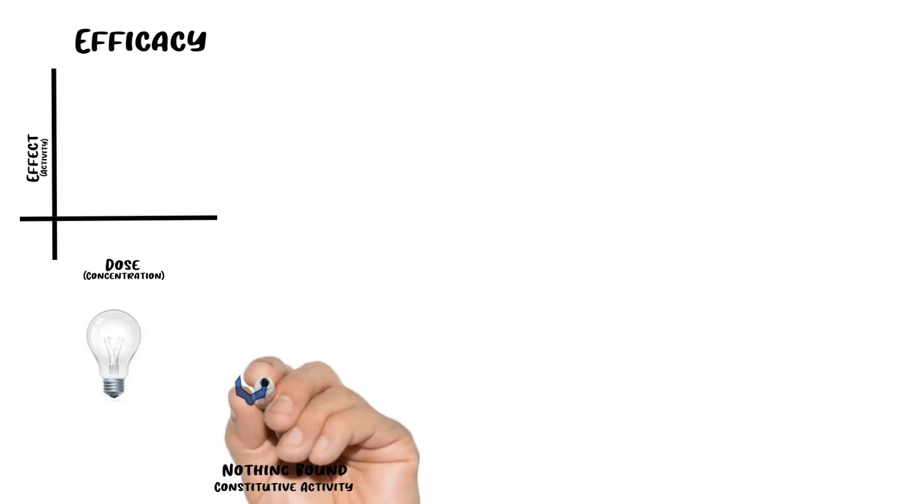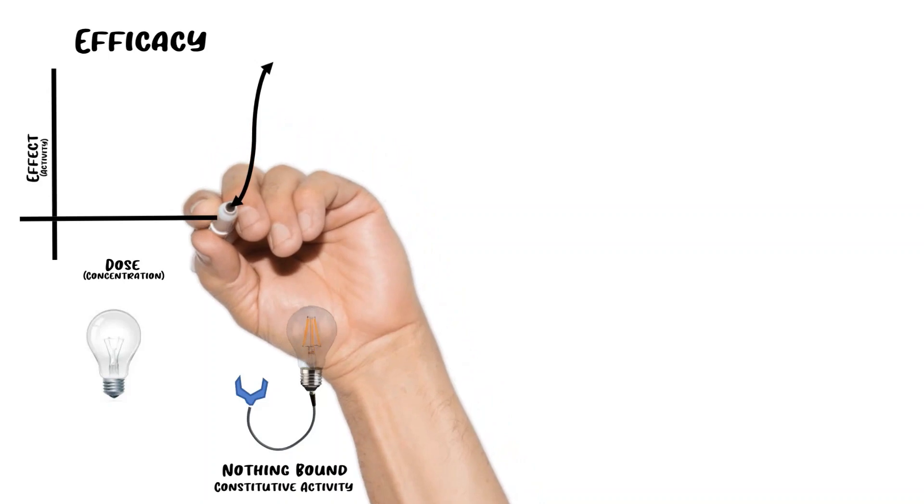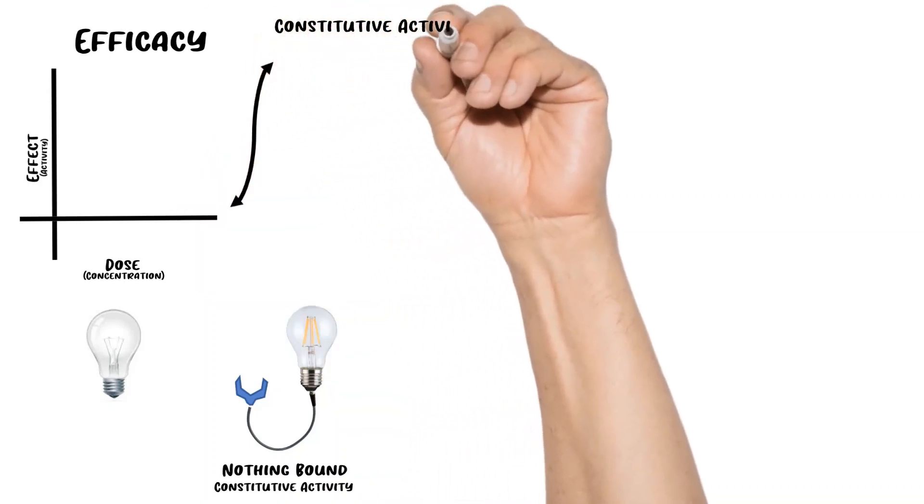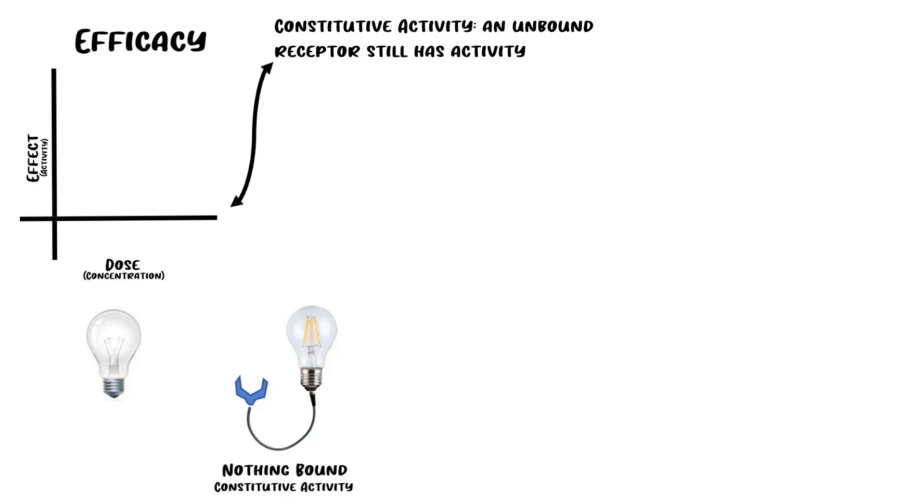Let's hook up this receptor, which is not bound by any drug or ligand, and see what happens to the light bulb. We can see that the light bulb has just a little bit of light, even though there's nothing bound to the receptor. Different dose-effect curves show this differently, but it's important to point out that zero on this curve is not zero effect, but rather the baseline of constitutive activity.